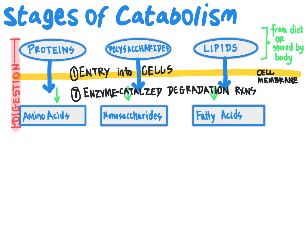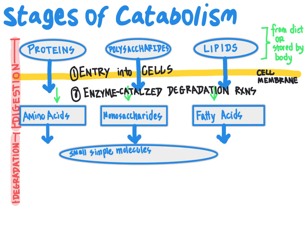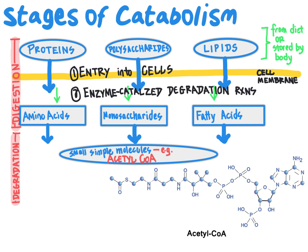These molecules — amino acids, monosaccharides, and fatty acids — are then subject to what we refer to as degradation processes. In degradation, these molecules are broken down into even smaller molecules, and generally broken down into a small set of different molecules, including as a primary molecule acetyl-CoA. The acetyl-CoA molecule is a product that results from the breakdown of amino acids, monosaccharides, and fatty acids. In other words, even though these three types of molecules are pretty distinct from one another and come from different food sources, they ultimately all result in production of acetyl-CoA as a catabolic intermediate.